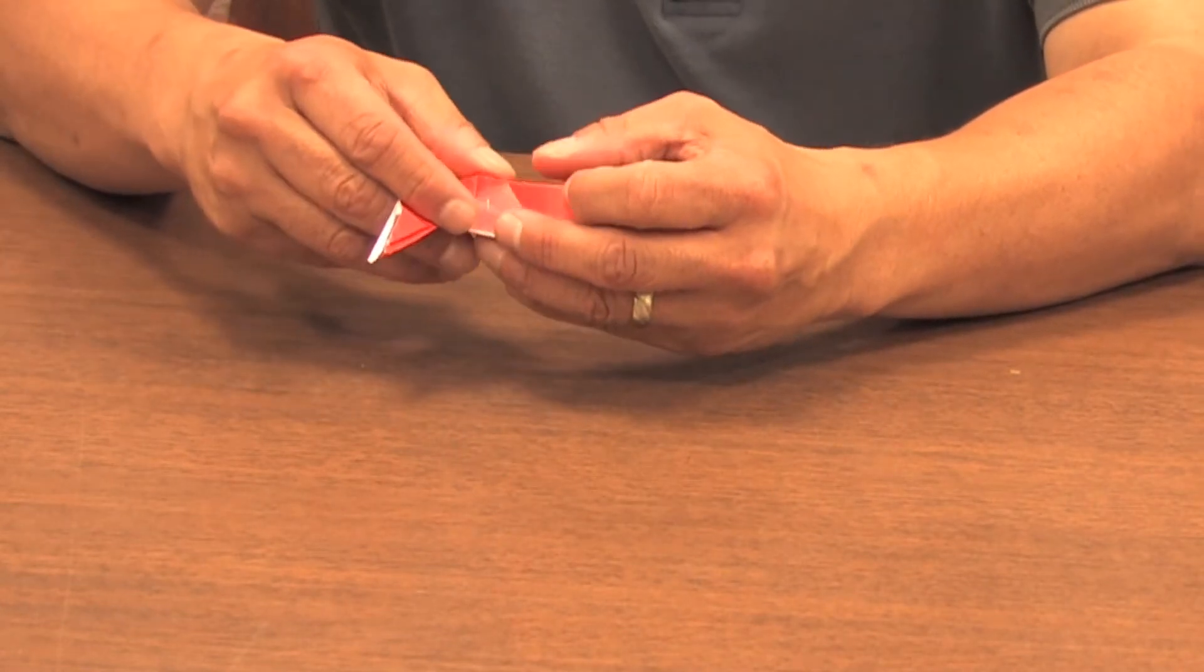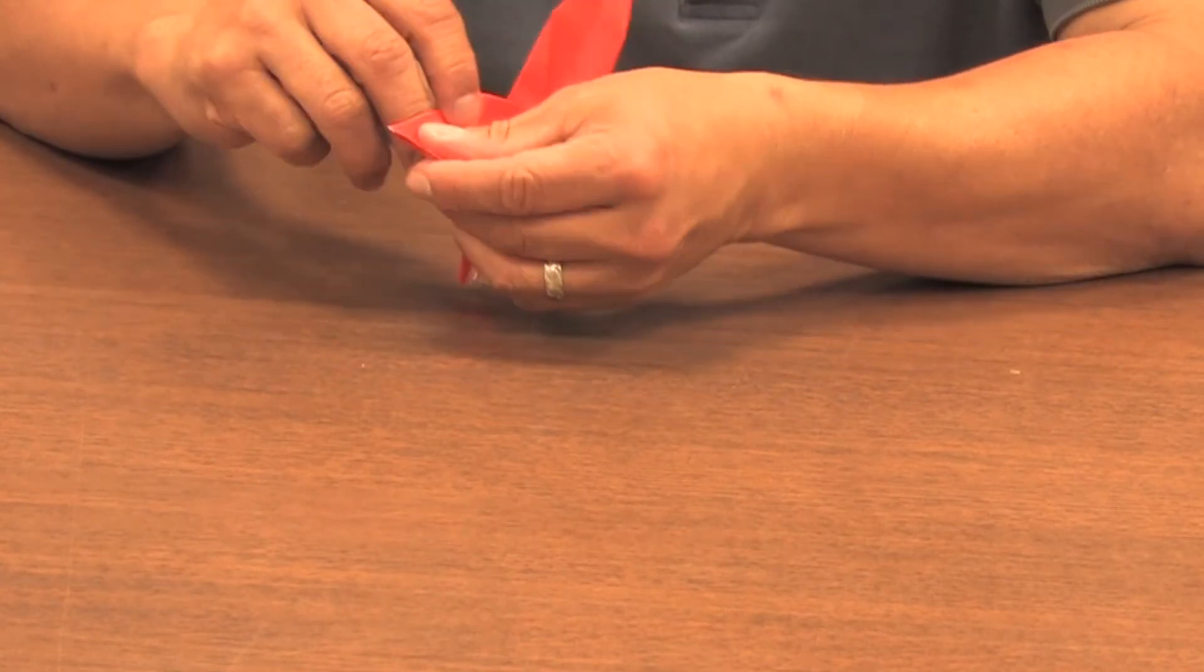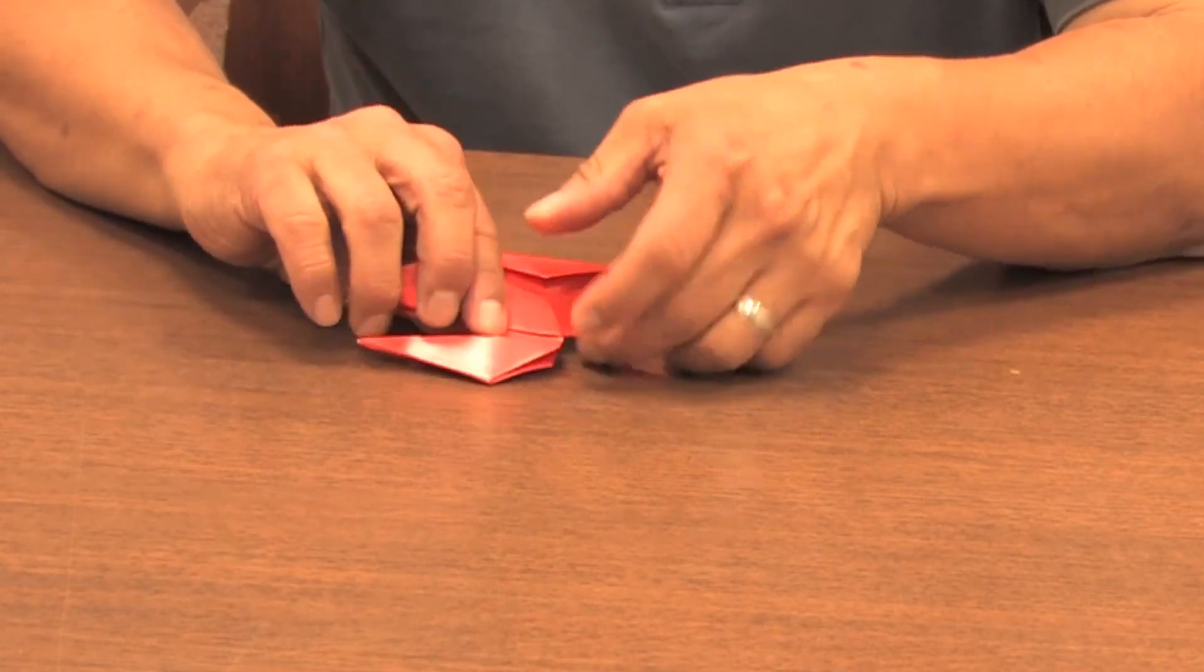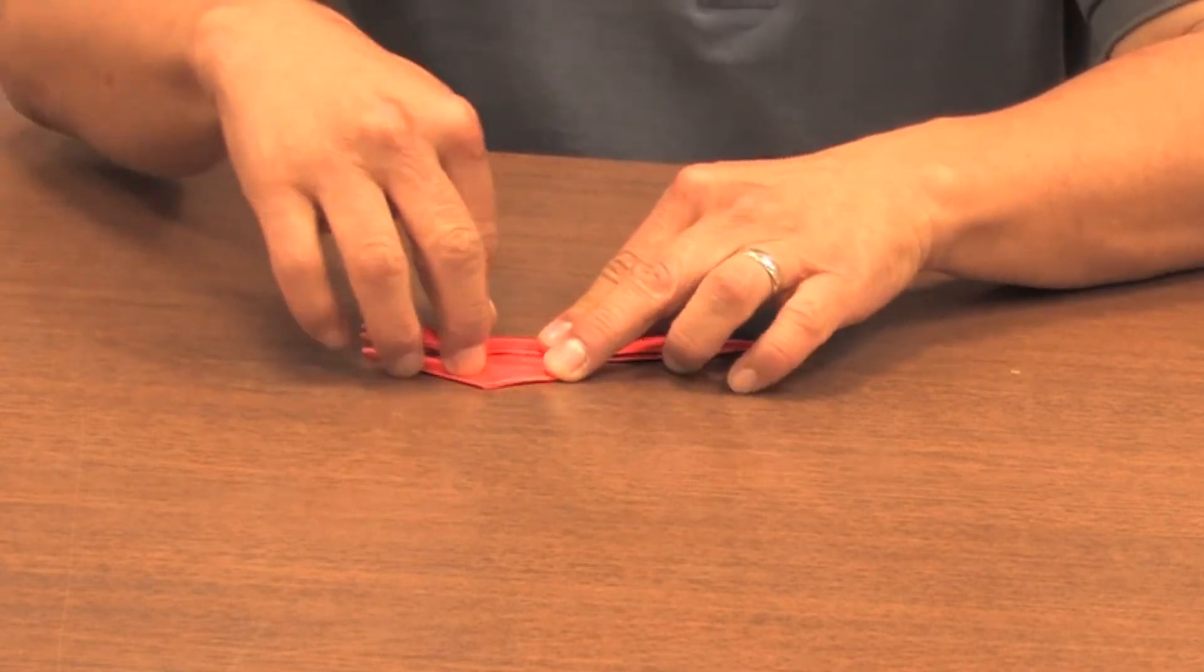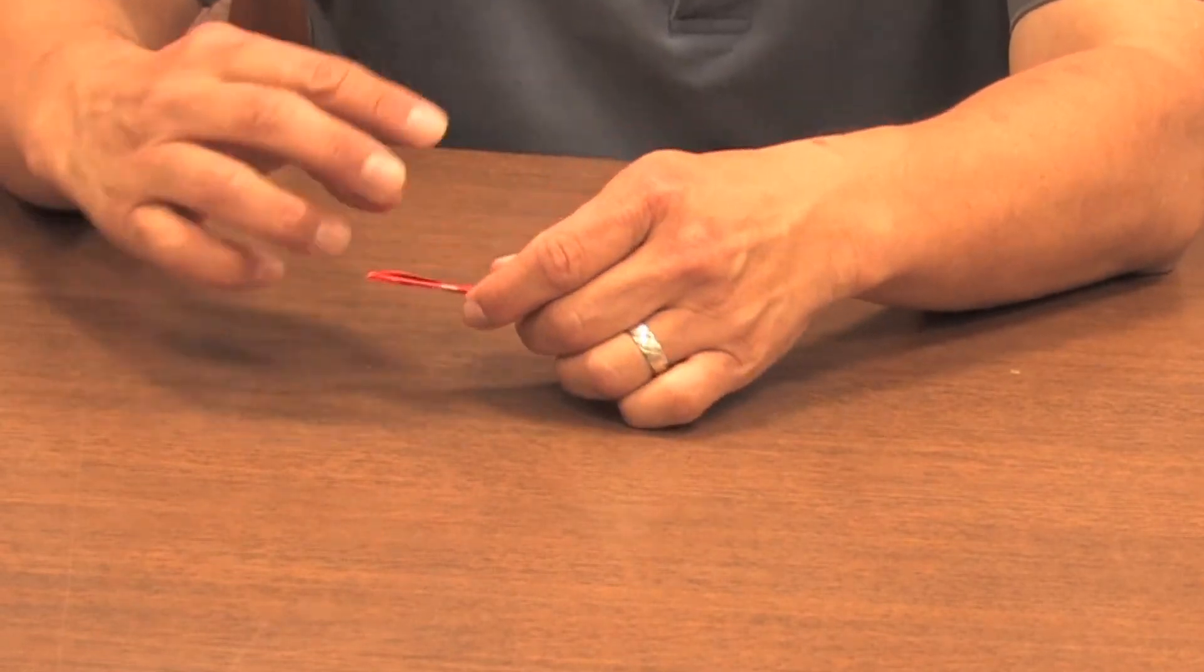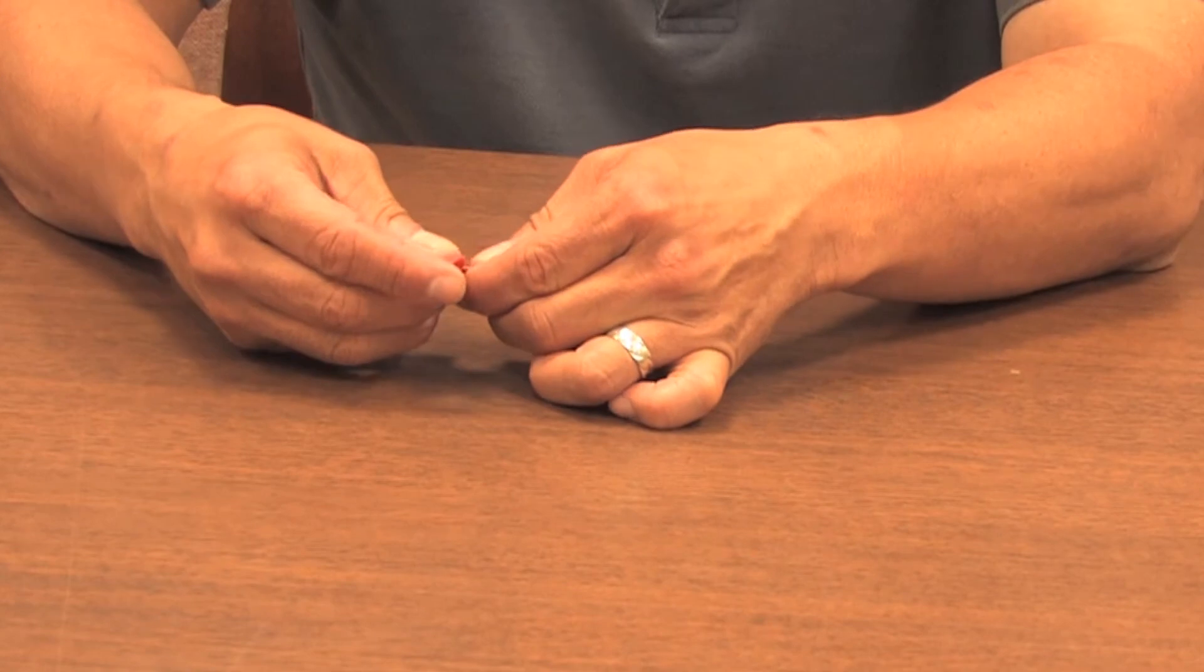And then to make the final fold, we'll do an inside reverse fold like that. And to make the head, this top part, you can have the head go at any angle. I like to have them kind of reaching up so he's a little bit taller.